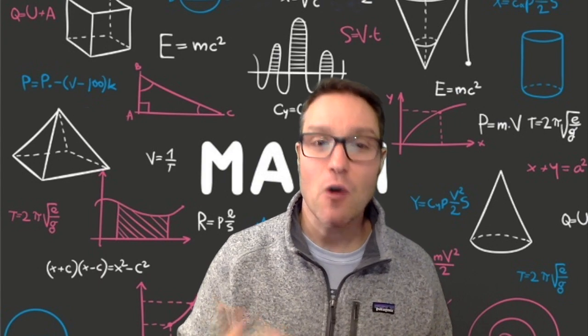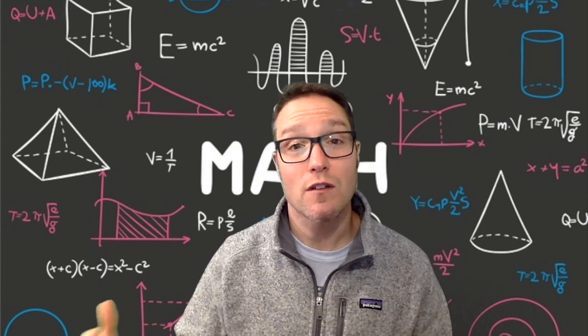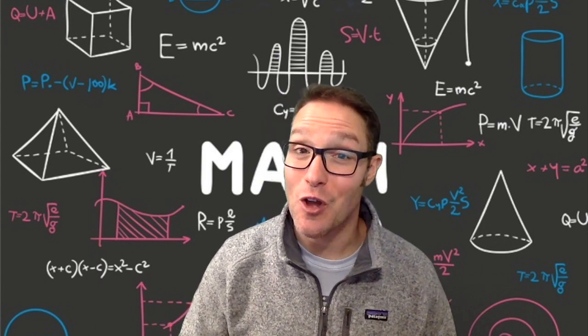If you flip a coin an increasingly large number of times, the proportion of heads will approach 50%. And that's the law of large numbers.